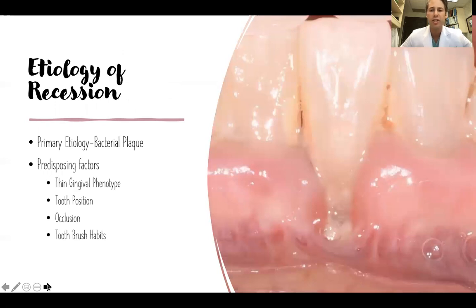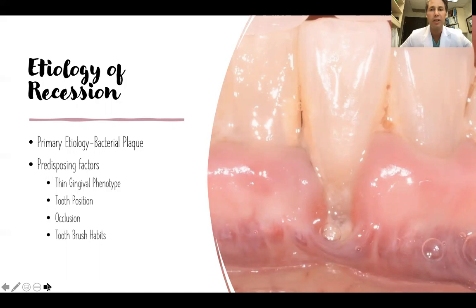Regarding etiology of recession: as with most periodontal disease processes, the primary etiological factor is bacterial plaque. Predisposing factors to consider for gingival recession grafting include a thin gingival phenotype — in this case the gingival phenotype is thin on the apical portion in the attached mucosa — tooth position and buccal inclination, occlusion (you can see in protrusion from this photo that tooth number 24 hits prior to any other teeth), tooth brushing habits, and also a shallow vestibule or aberrant frenum attachment.